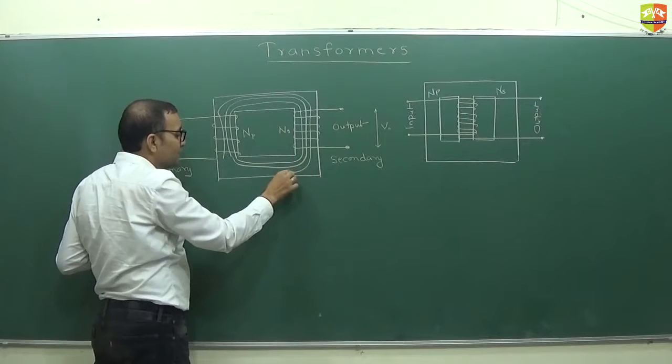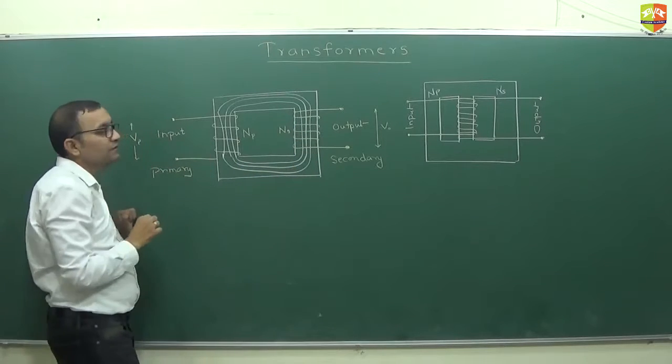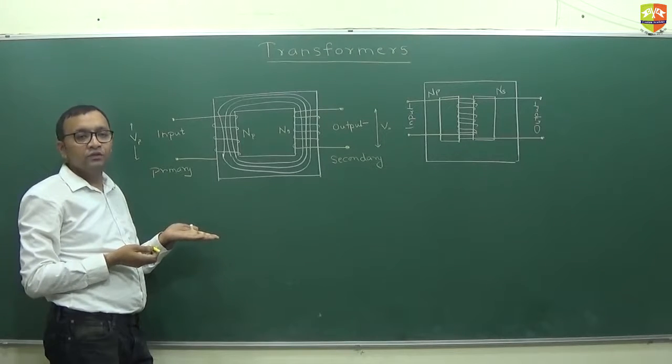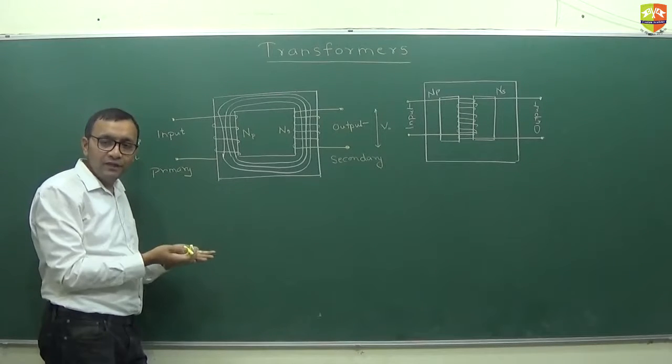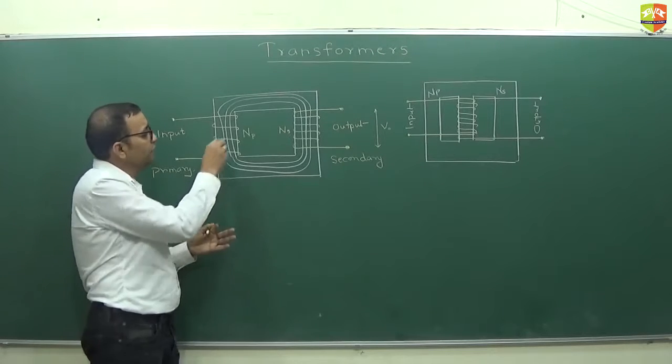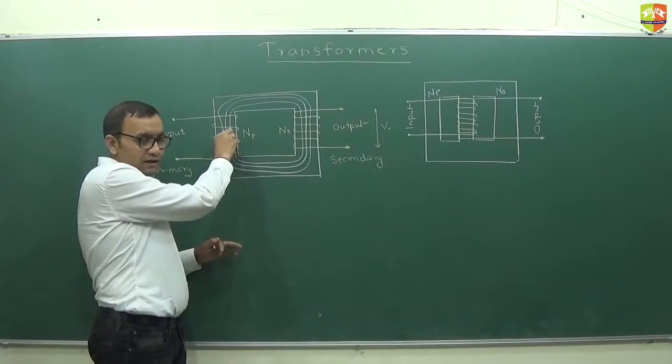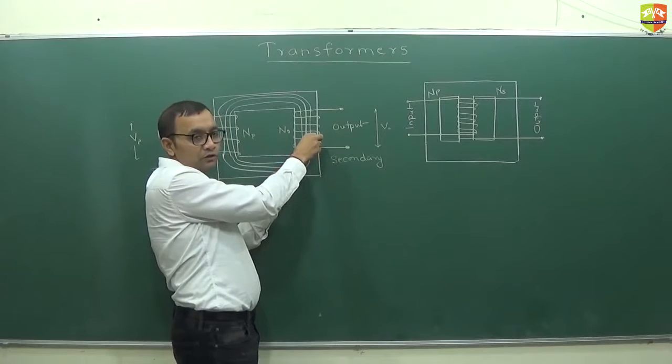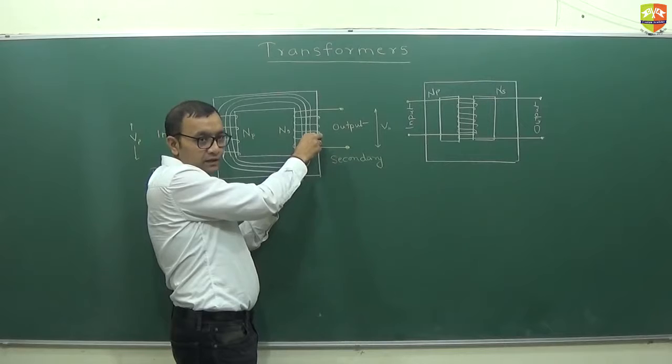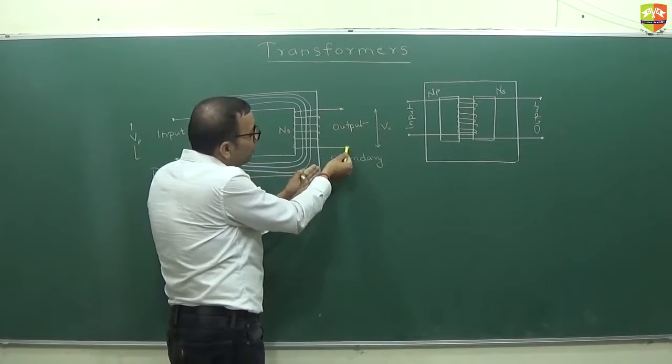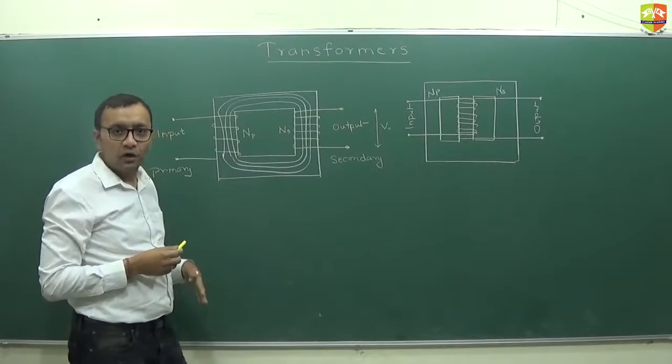Now, what happens is the flux changes with time. Why does it change with time? Because voltage is changing with time, so current changes with time, magnetic field changes with time, and that's how the flux changes with time. So flux will change this side, and because of that flux change, flux changes on that side also.